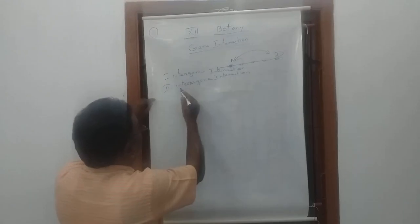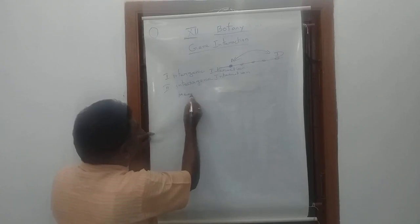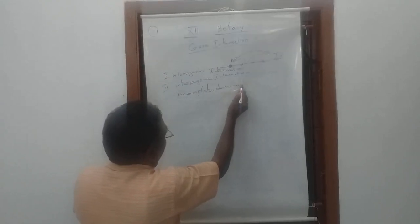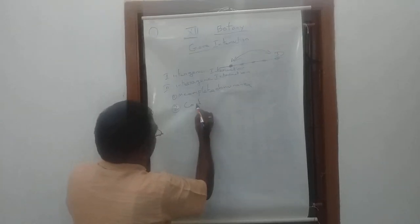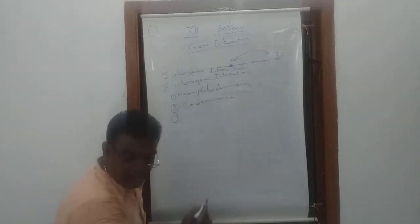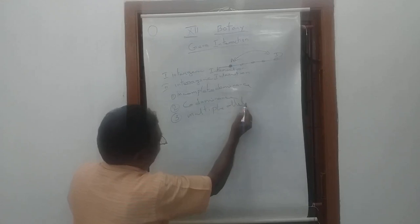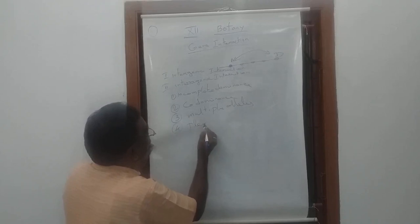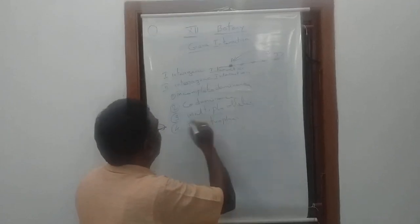In intragenic interaction, there are four types. One is incomplete dominance, next one is co-dominance, another one is multiple alleles, and the last one is pleiotropic.